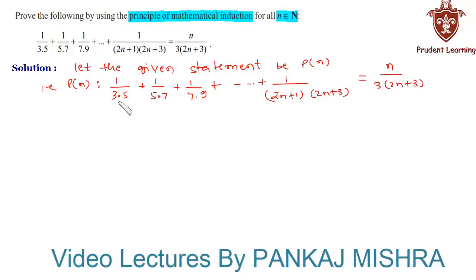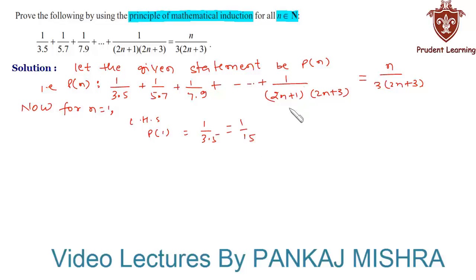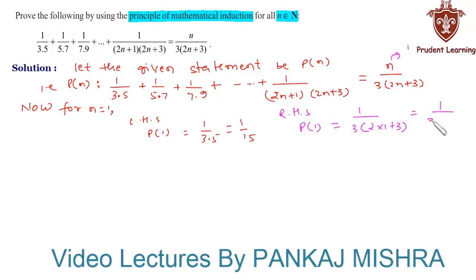In our first step we verify whether the given equation holds true for n=1. For n=1, the left-hand side is 1/(3×5) = 1/15. On the right-hand side, substituting n=1 into n/[3(2n+3)] gives 1/[3×(2+3)] = 1/(3×5) = 1/15. Since LHS equals RHS, P(1) is true.